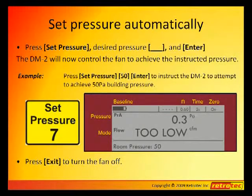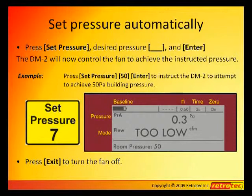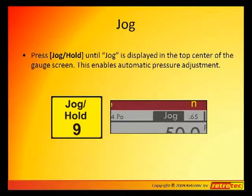For example, if we press the Set Pressure key, then 5, 0, Enter, we have just instructed the DM2 to attempt to achieve a 50 Pa pressure differential in the building. After an initial pressure has been set, the Jog function is now activated and can be utilized by pressing the Jog Hold key on the keypad until the word Jog appears on the top display bar.